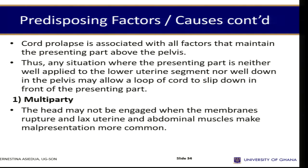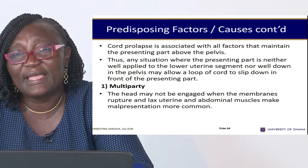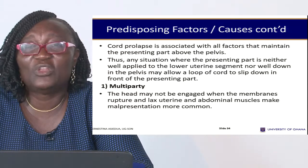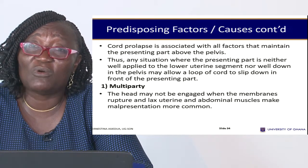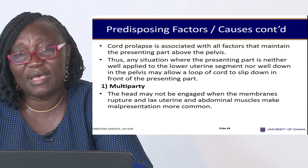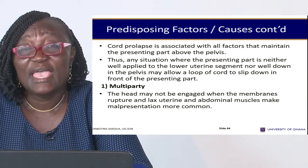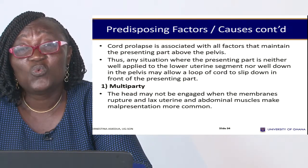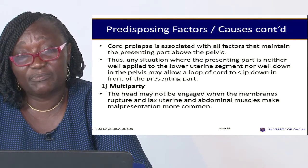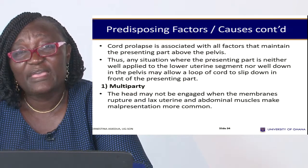Any factor that maintains the presenting part above the pelvis can lead to cord prolapse. Any situation where the presenting part is not well applied to the lower uterine segment or well down in the pelvis allows a loop of cord to slip down in front of the presenting part. If the head is high and there is space between the presenting part and the pelvic brim, the cord can slip and come in front.